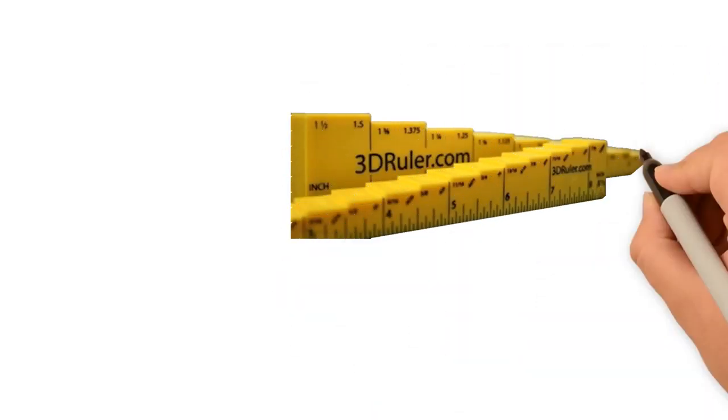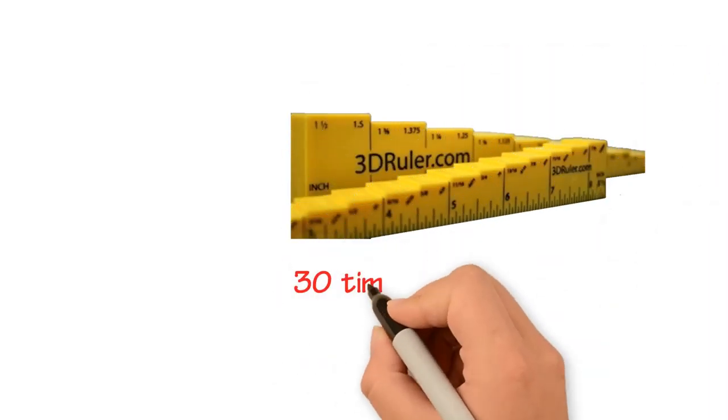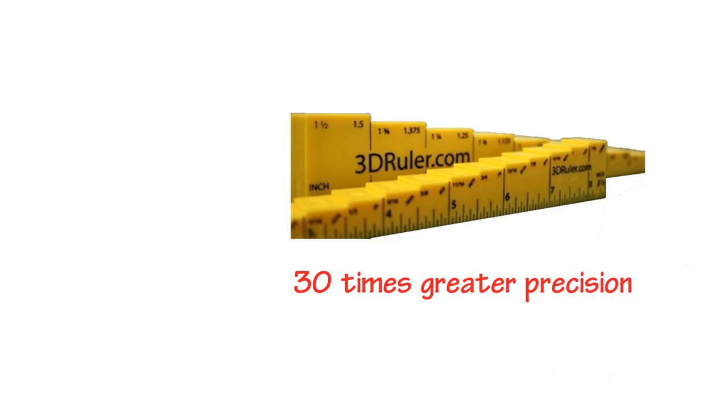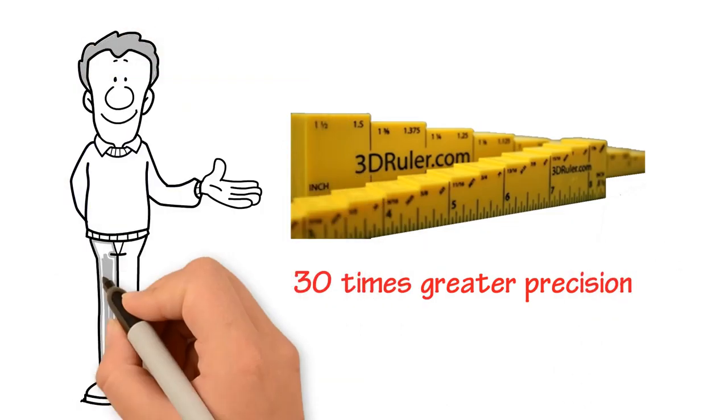The Aspects of Wood 3D Ruler is an innovative measuring tool that gives you 30 times greater precision using your fingertips than with just your eyes alone.